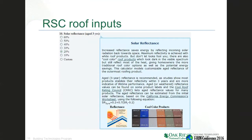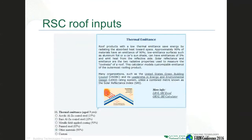Once you select a material, we have a default reflectance but you can change that. We ask that you use an aged three-year value because most products like a white roof will be very reflective at first, but in three years it drops down and hits the asymptote of where the real reflectivity of that roof is. If you don't happen to know that, you can go to the Cool Roof Rating Council — just mouse over the question mark — click that link and look up specific products to get the aged reflectance values for your material.